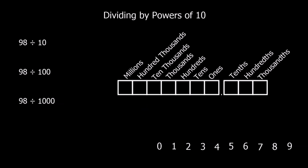Here's another question. We start with 98 — 9 in the tens, 8 in the ones — and we divide by 10. When we divide by 10 we move everything back to the previous column: the ones move into the tenths and the tens move into the ones. So our answer is 9.8.